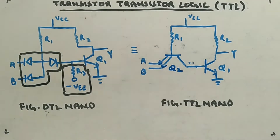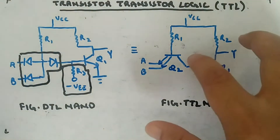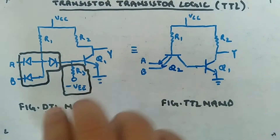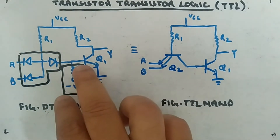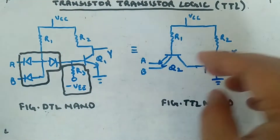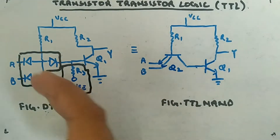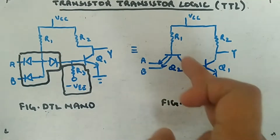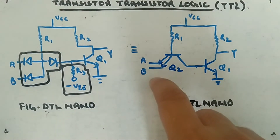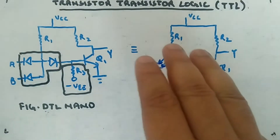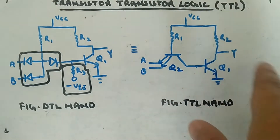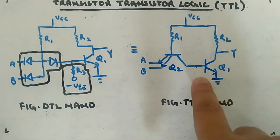It is the same circuit with modifications — it has become a TTL NAND gate. The working will be slightly different. I have simply removed the diode part and represented the three-diode combination with a single multi-emitter transistor. If you have more inputs, you have more emitter lines: three inputs — three emitters, four inputs — four emitters. I am calling this transistor Q2; Q1 remains as before. This is still working as a NAND gate.